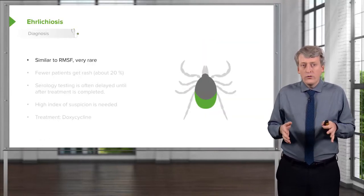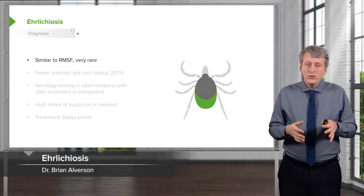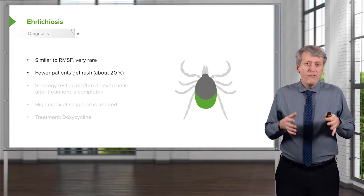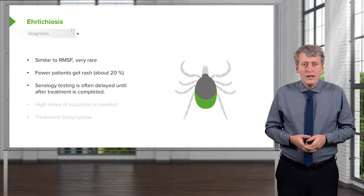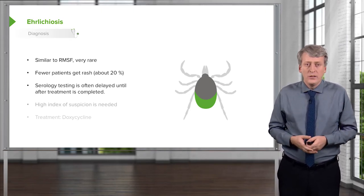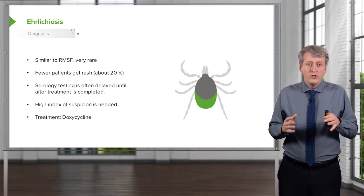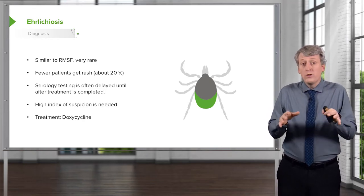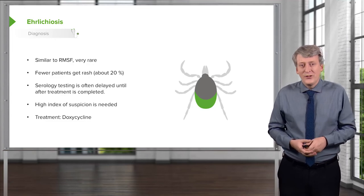Ehrlichia, or ehrlichiosis, is similar to Rocky Mountain spotted fever but very rare. Generally fewer patients get the rash — only about 20% of the time — and serologic testing is often delayed until after treatment is completed. You have to have a high index of suspicion, and we generally treat with doxycycline. That's a summary of the most common tick-borne illnesses in the United States. Thanks for your attention.